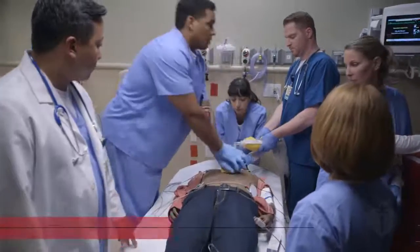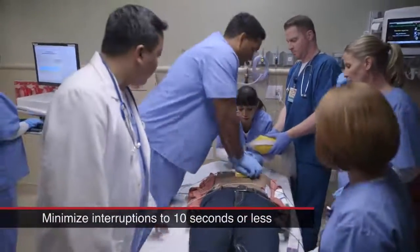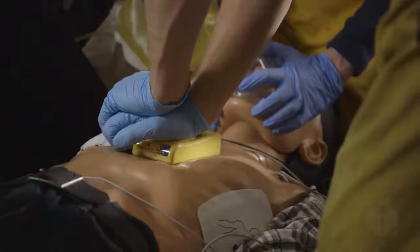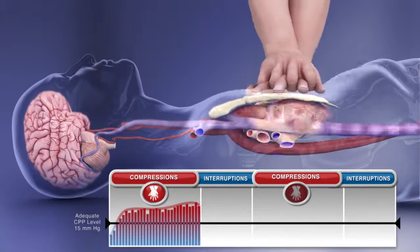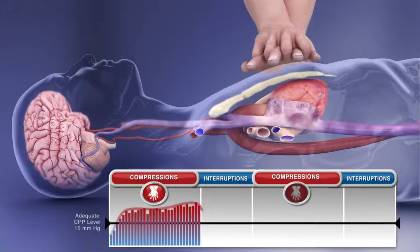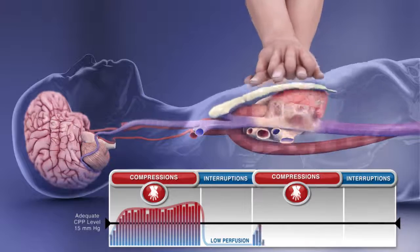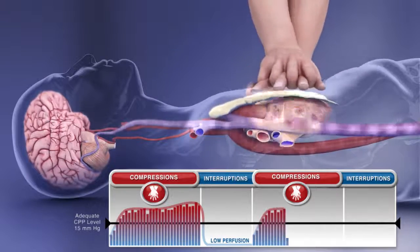Minimizing interruptions in compressions: health care providers must minimize interruptions in chest compressions, including any pauses to deliver ventilations. When health care providers interrupt chest compressions, coronary perfusion pressure decreases dramatically and remains very low until compressions are resumed. It takes several compressions to build enough pressure to achieve an adequate coronary perfusion pressure necessary to get ROSC.